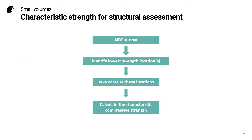Here we can see the workflow for the first application. We begin by doing an NDT survey. We identify the lowest strength location or locations. We take cores at these locations, and finally we calculate the characteristic compressive strength.